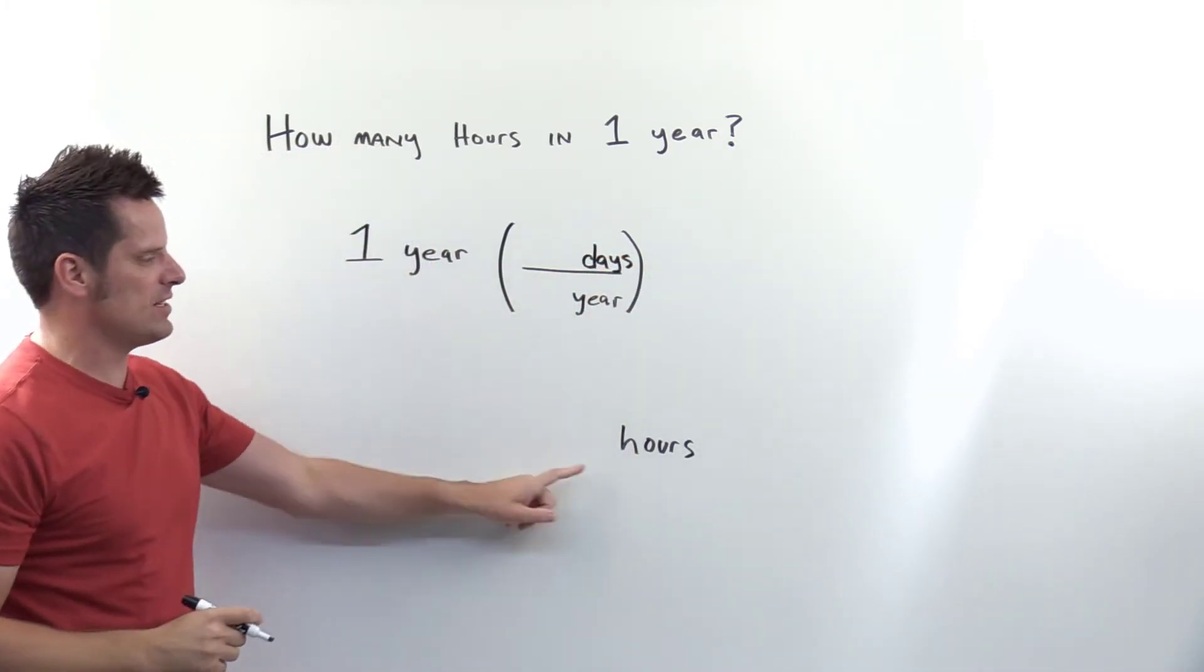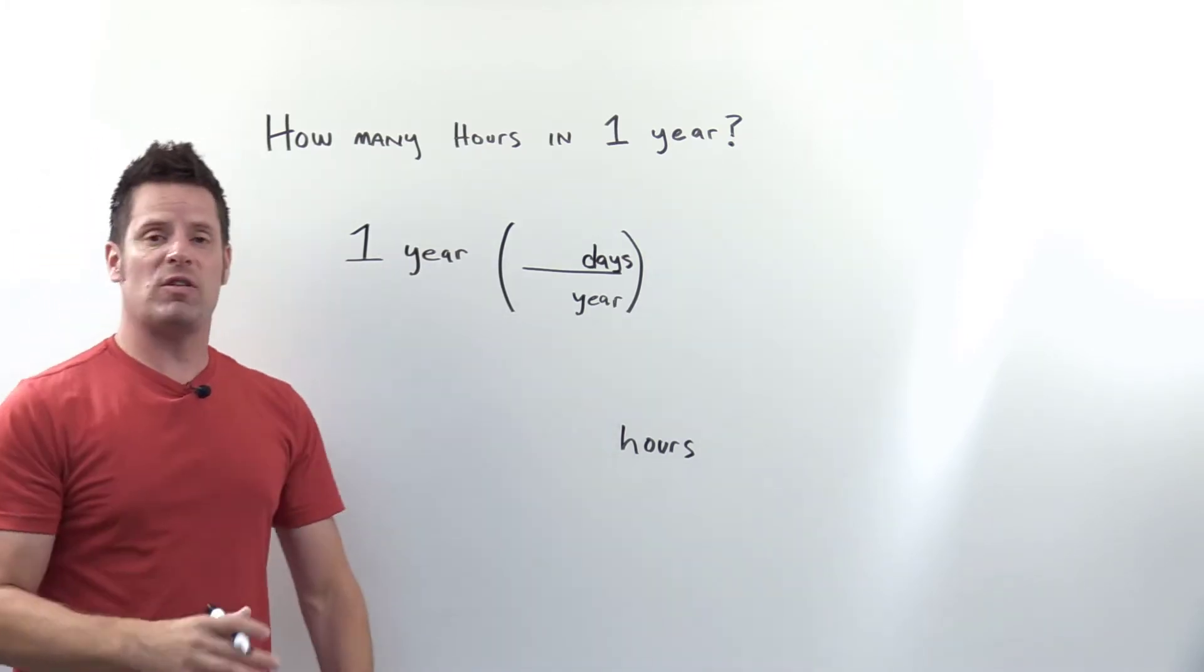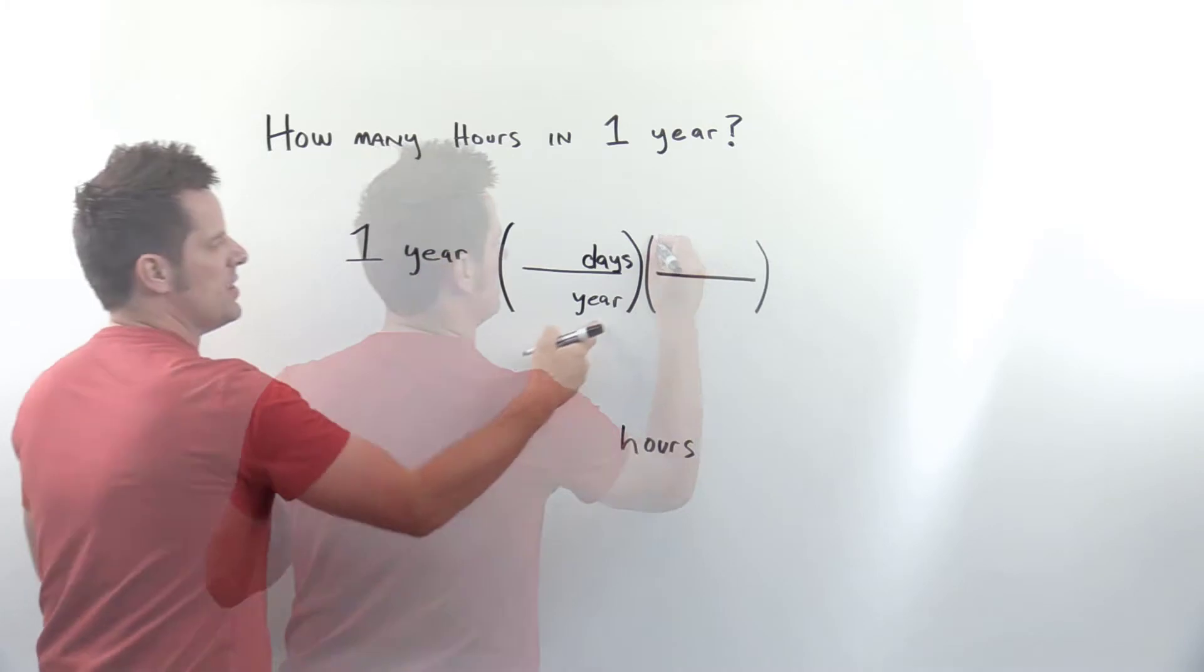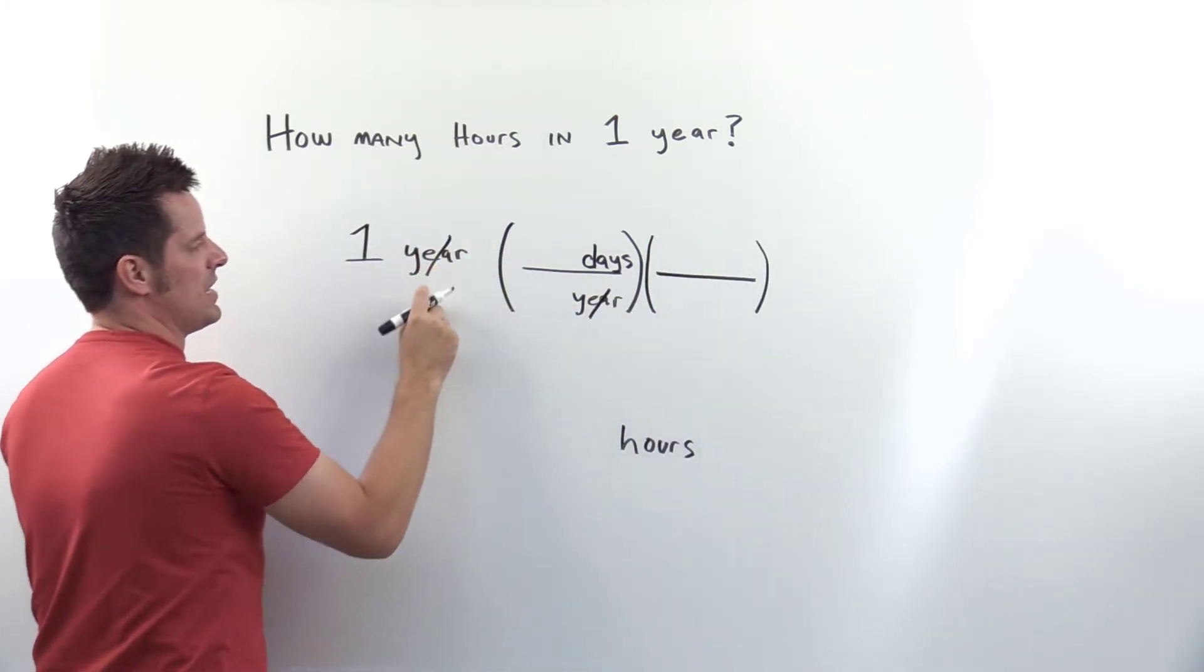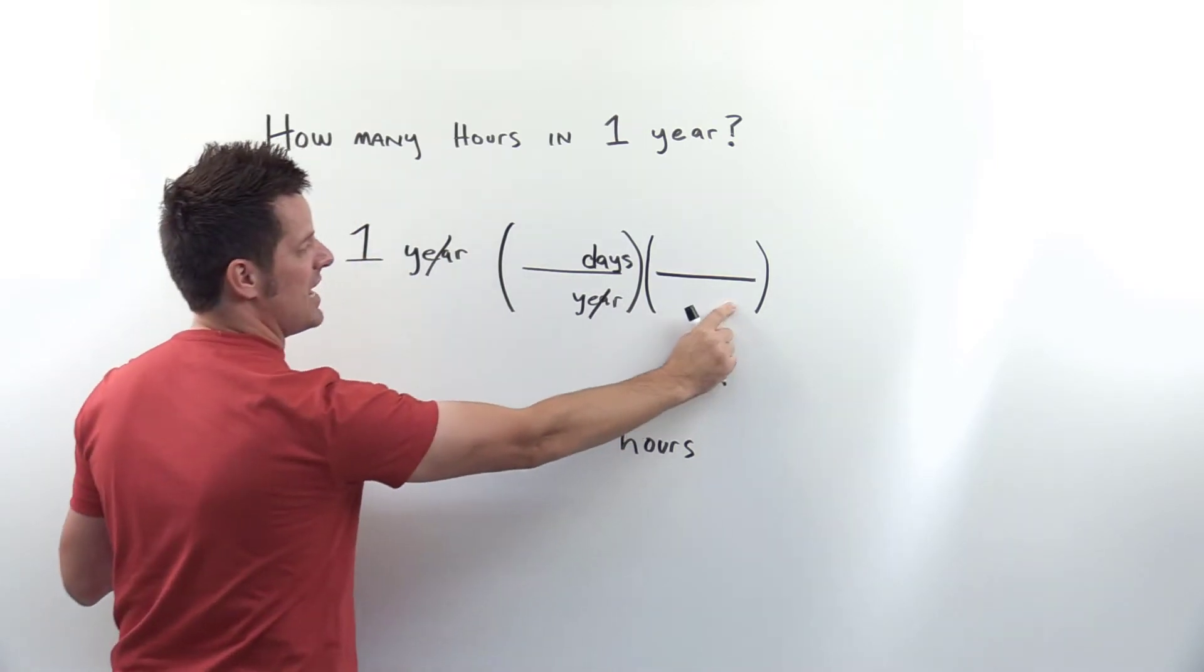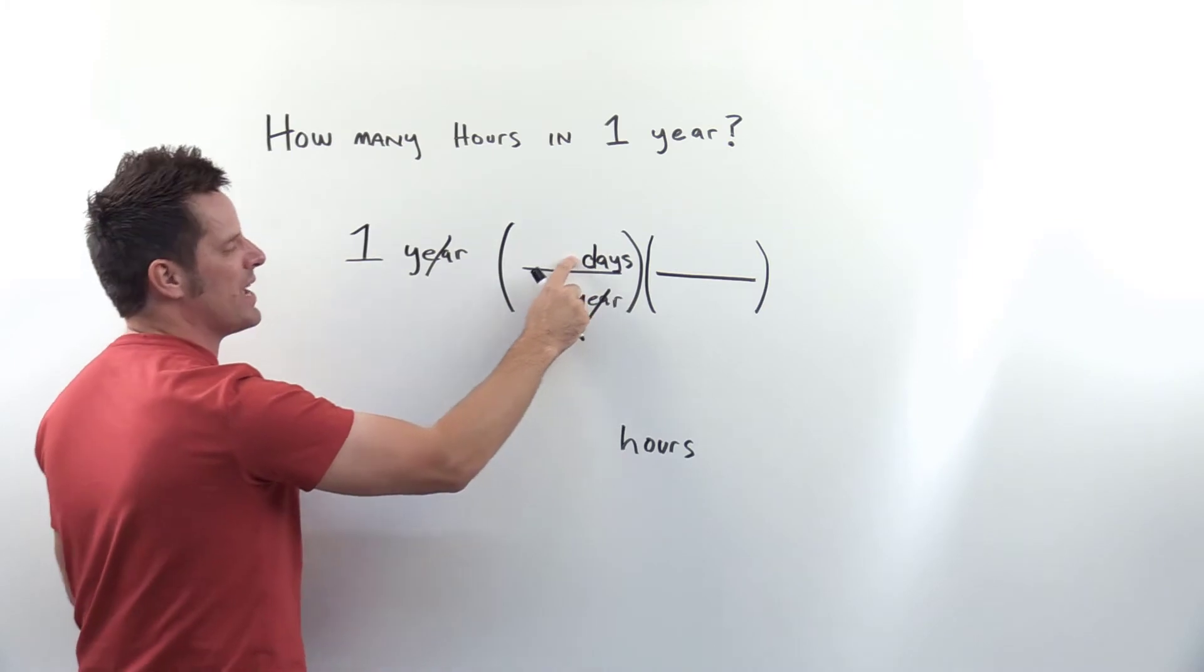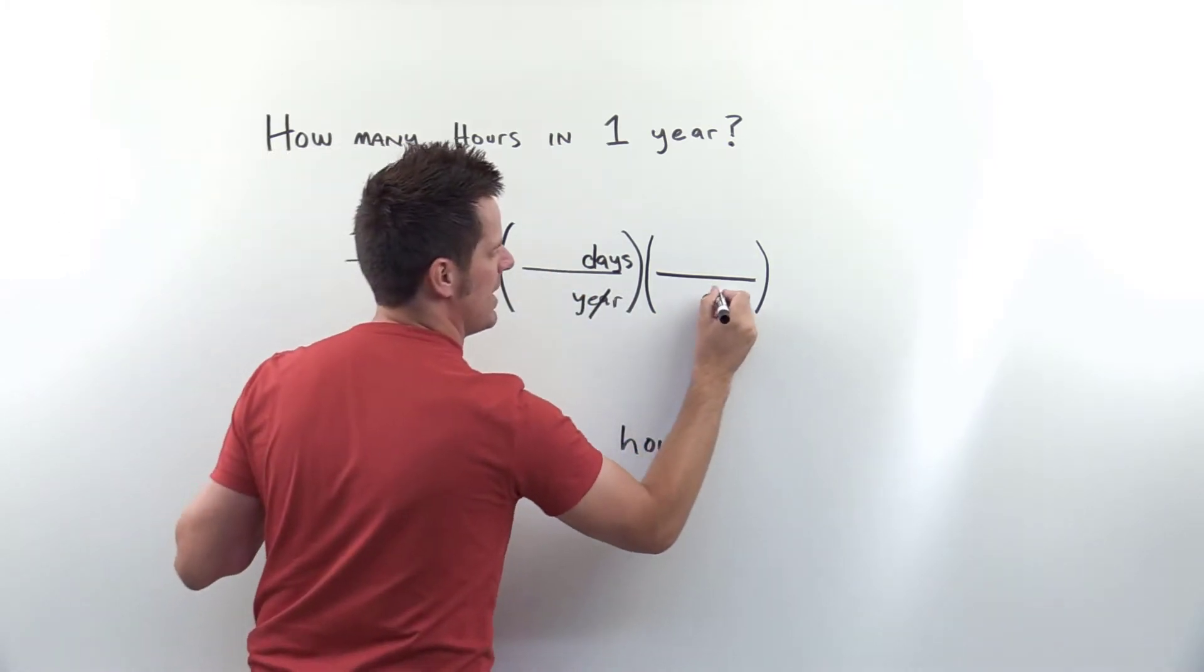That doesn't get us to our final units of hours, so I'll add another set of parentheses. This year gets cancelled out by that year. What units go in the denominator here? As before, they're the same units in the numerator of the previous term. So I'll write down days.